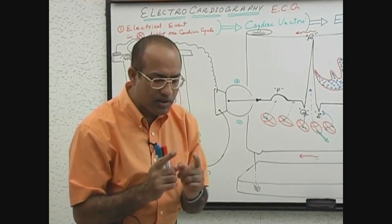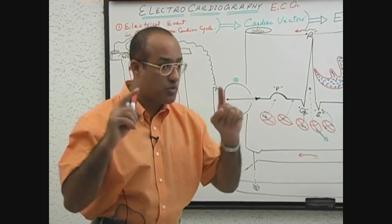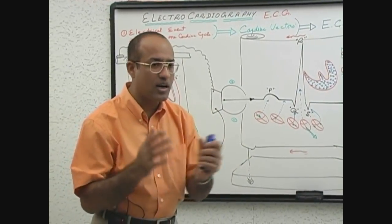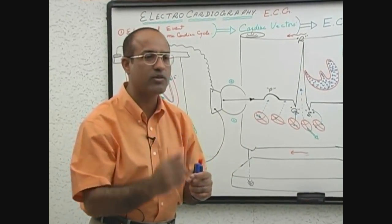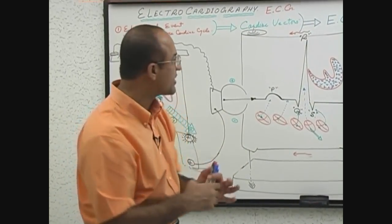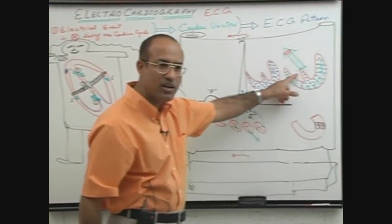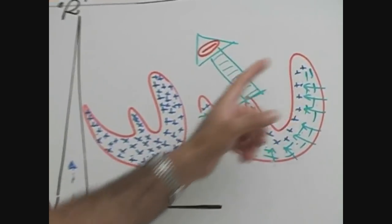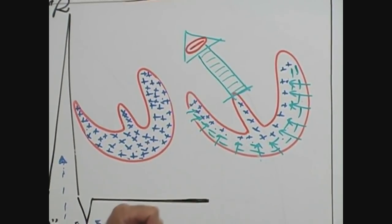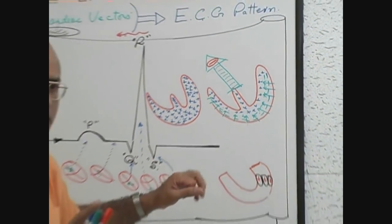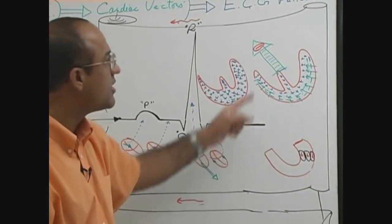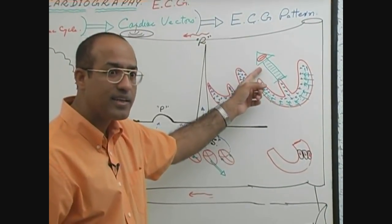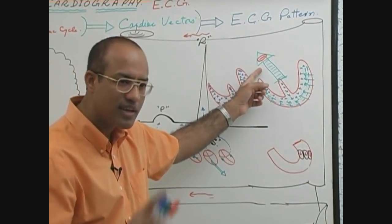Septal repolarization, major ventricular repolarization, and basal repolarizing vectors are almost overlapping with each other. Therefore the strongest vector will move the needle, and the strongest vector is major ventricular repolarization. Septal repolarization and basal repolarization are fused with it. So the repolarizing current makes a single important vector moving rightward and upward, carrying negative current at its head.